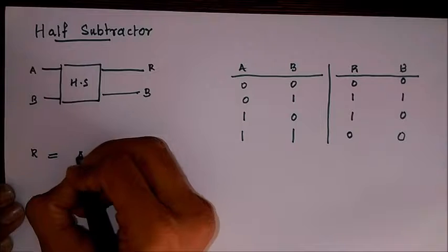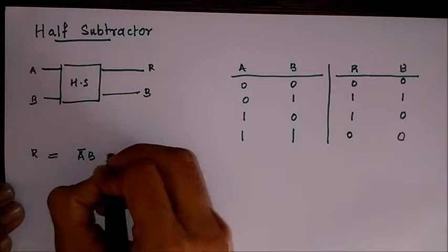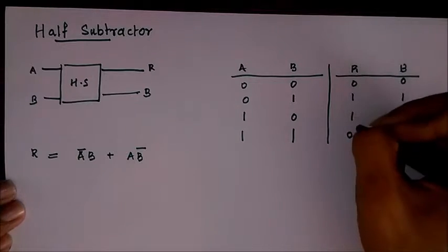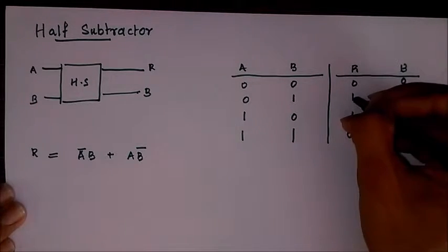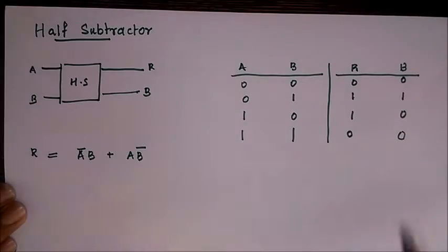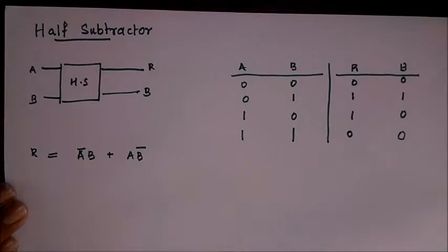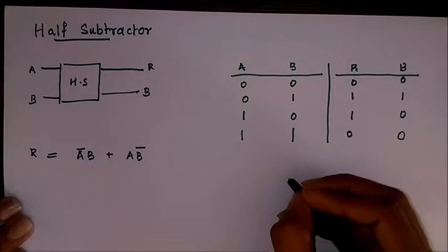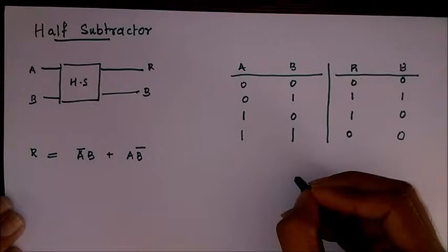A̅B + AB̅, that is, this is same as when we are writing the SOP. We take the one terms, and one is A and the zero will be its complement. Likewise for me, that is how we get the equation. Otherwise you can also obtain the same from a K-map.